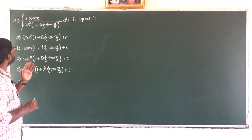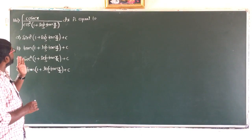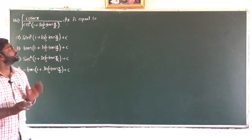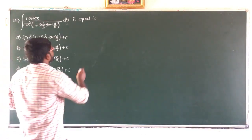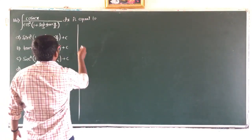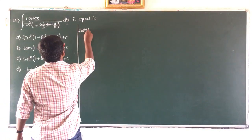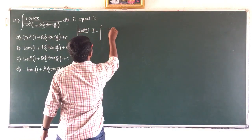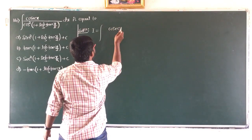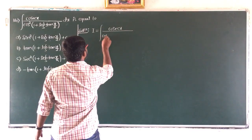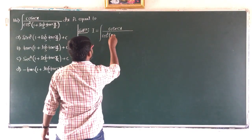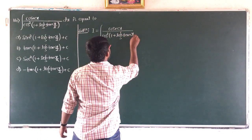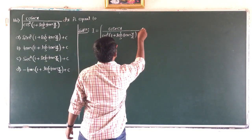The next question, the 14th one: integral of cosec x divided by cos²(1 plus log(tan(x/2))) dx is equals to. This was asked in 2006. Consider the given integral: I equals integral of cosec x divided by cos²(1 plus log(tan(x/2))) dx.